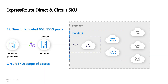The second design I want to talk about is related to ExpressRoute Direct and ExpressRoute circuit. ExpressRoute Direct is a connectivity model where you can buy a pair of 10G or 100G ports to connect to us directly. Once you set up these physical connections, you can create ExpressRoute circuits, which are logical connections on top of these physical connections.